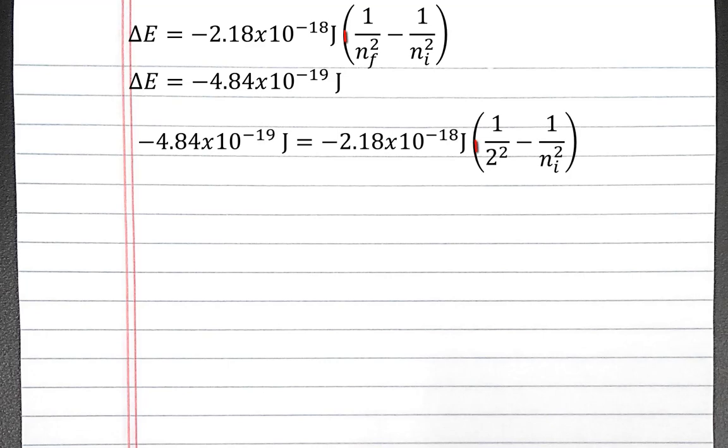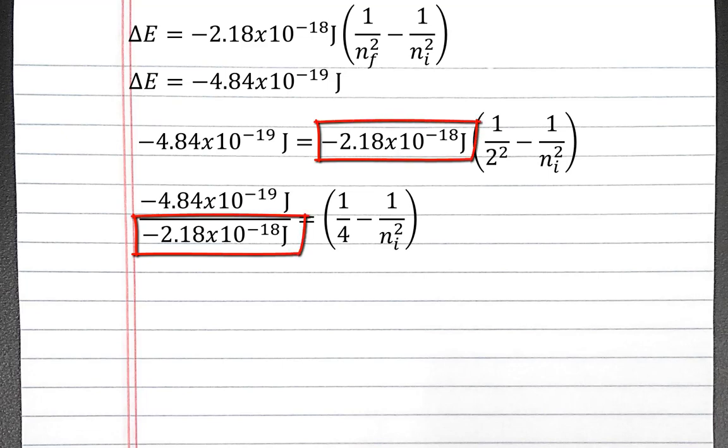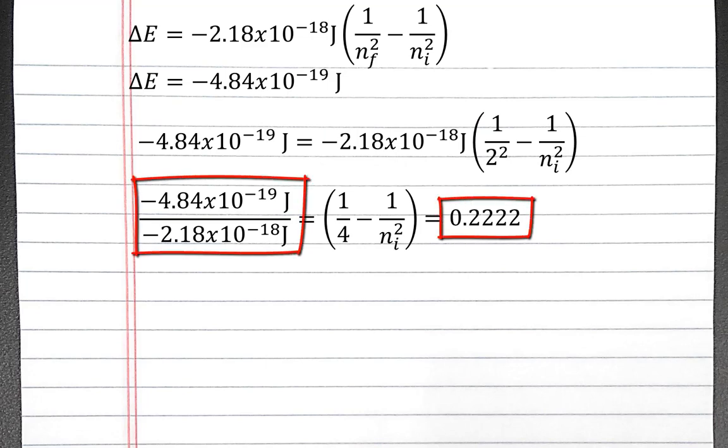Now we can plug the final energy level into our equation, along with the change in energy that we just calculated. We can divide both sides by negative 2.18 times 10 to the negative 18th. And on the left, we'll get 0.2222.